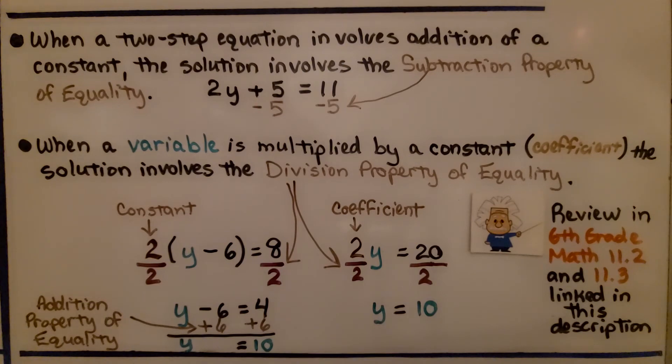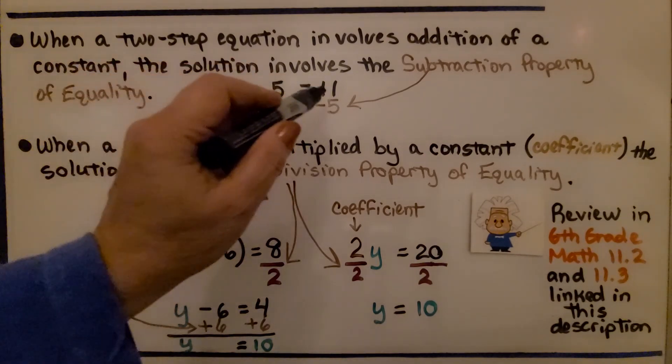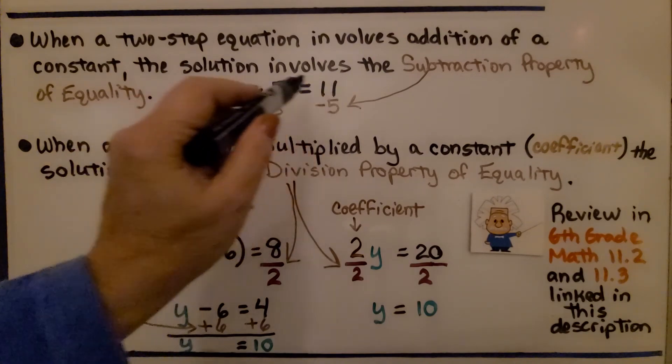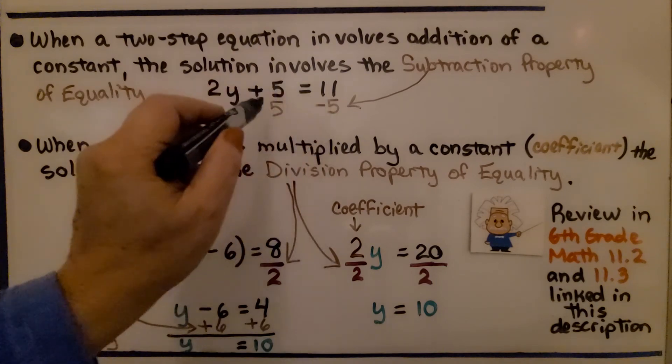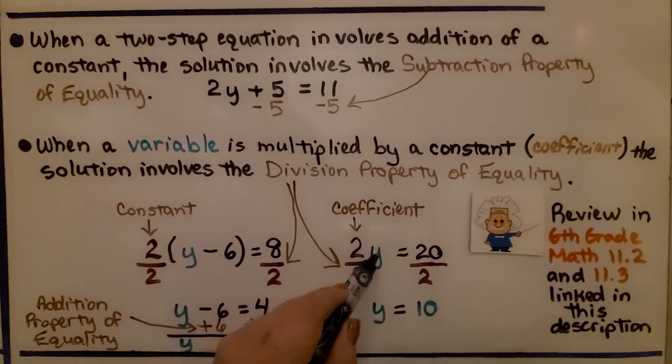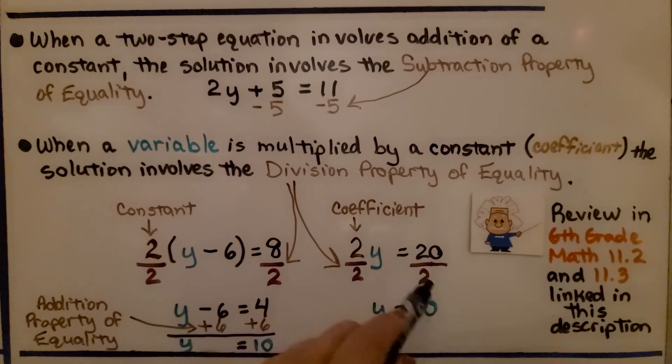When a two-step equation involves addition of a constant, the solution involves the subtraction property of equality. We have a two-step equation here, and it involves the addition of a constant. We've got this plus 5. That means the solution is going to involve the subtraction property of equality. It's equal to both sides of the equation, and we're going to subtract. When a variable is multiplied by a constant or coefficient, the solution involves the division property of equality. So here we have 2 times y minus 6 is equal to 8. So we're going to use division. Here we have a constant. We're going to divide both sides by 2. Or here we don't have the parentheses. We just have a coefficient. 2y is equal to 20. We divide both sides by 2. It's going to be y is equal to 10. And here, after we add 6 to each side, we would get y is equal to 10. And that's the addition property of equality.